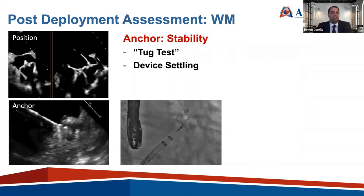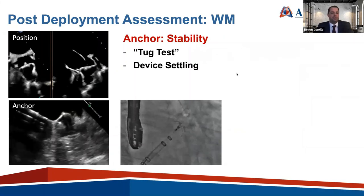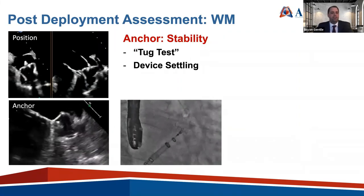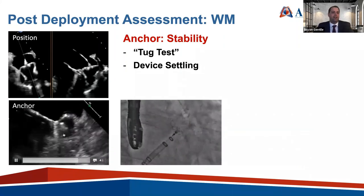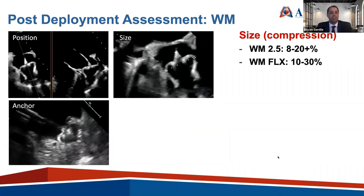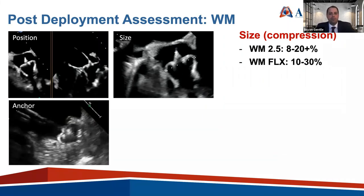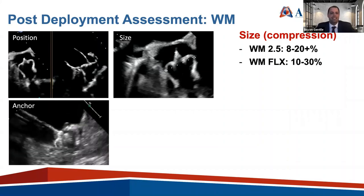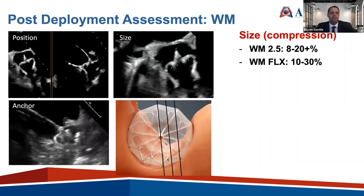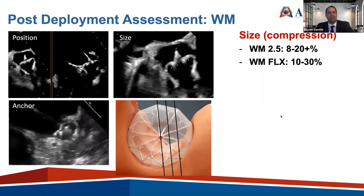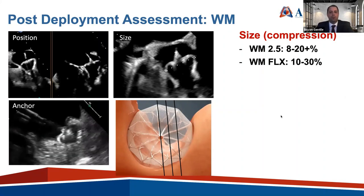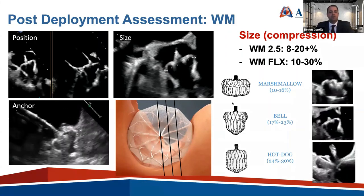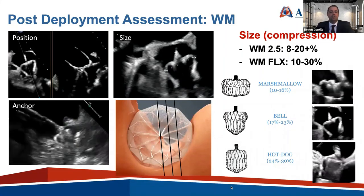Next we check Anchor — a stability tug test. We do about three to four tugs; the first may settle the device, so multiple tugs are important. We want to see the device return to its original position after tugging. Then we check Size — meaning compression. For the Watchman 2.5, we allow 8% to 20% or more compression; for the Flex, we look for 10% to 30% compression. It's important to see the threaded insert — if you don't see it, you're foreshortening and overestimating compression. With the Watchman Flex, the more compressed it is, the more it elongates due to its closed distal end.